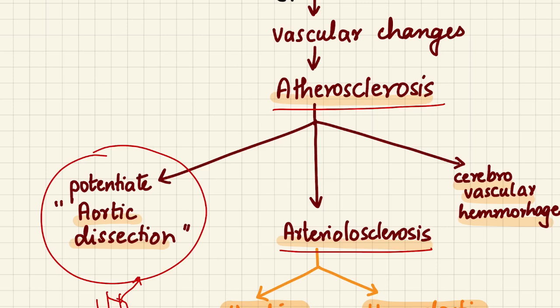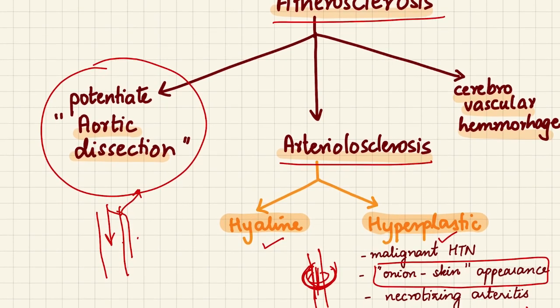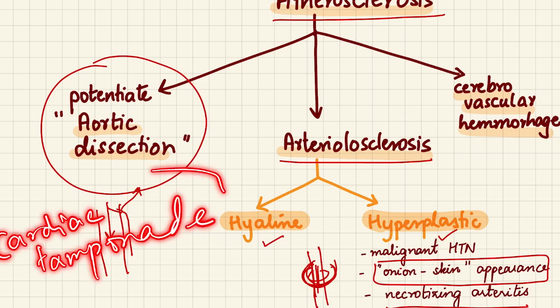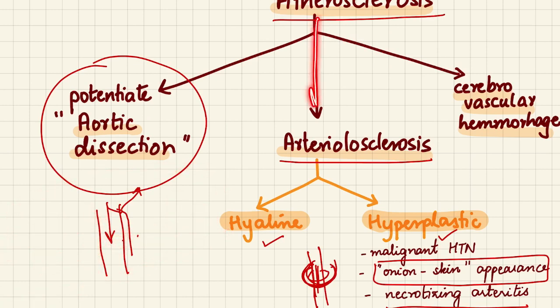Lastly, hypertension causes vascular changes leading to atherosclerosis, which has been strongly linked to aortic dissection — meaning the intima of the proximal ascending aorta is torn and blood flows between the intima and media or adventitia, which can also lead to cardiac tamponade. It can also progress to arteriolosclerosis, which can be hyaline or hyperplastic type. Additionally, atherosclerosis can cause cerebrovascular hemorrhages and intracerebral bleeds. That is a short recap of hypertension; for the detailed lecture, watch the previous video.